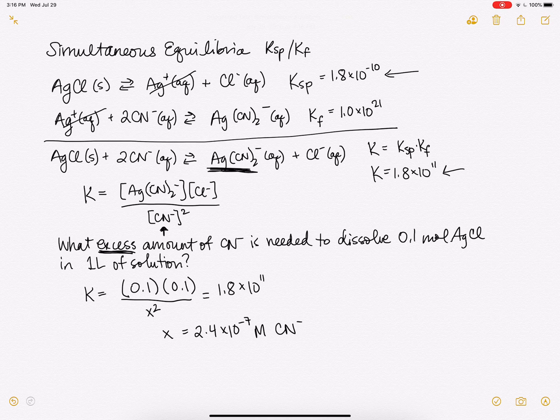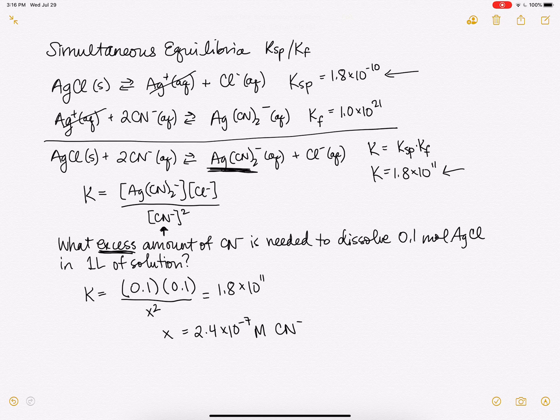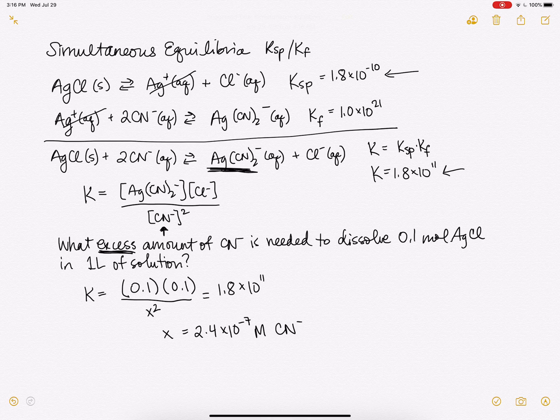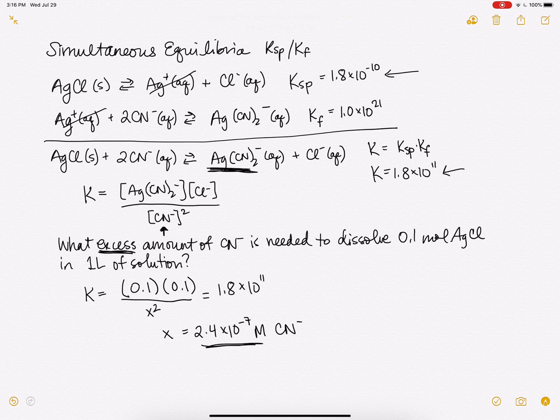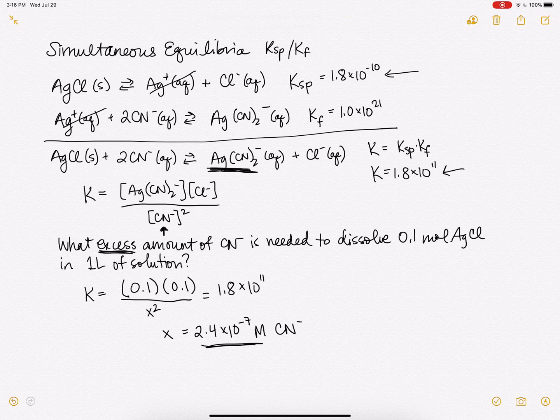And another thing we might think about is, you know, how much cyanide do we have to add here in order to make this dissolve? Obviously the amount to make the AgCN2 minus ion, but in terms of excess, it's only a very small amount of excess that's needed to keep this dissolved in solution and maintain that equilibrium. So I hope this is helpful and that you have a good day!